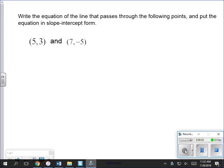Write the equation of the line that passes through the following points and put the equation in slope-intercept form. That means we want it in y equals mx plus b. So we need to find the m and we need to find the b to plug in there.